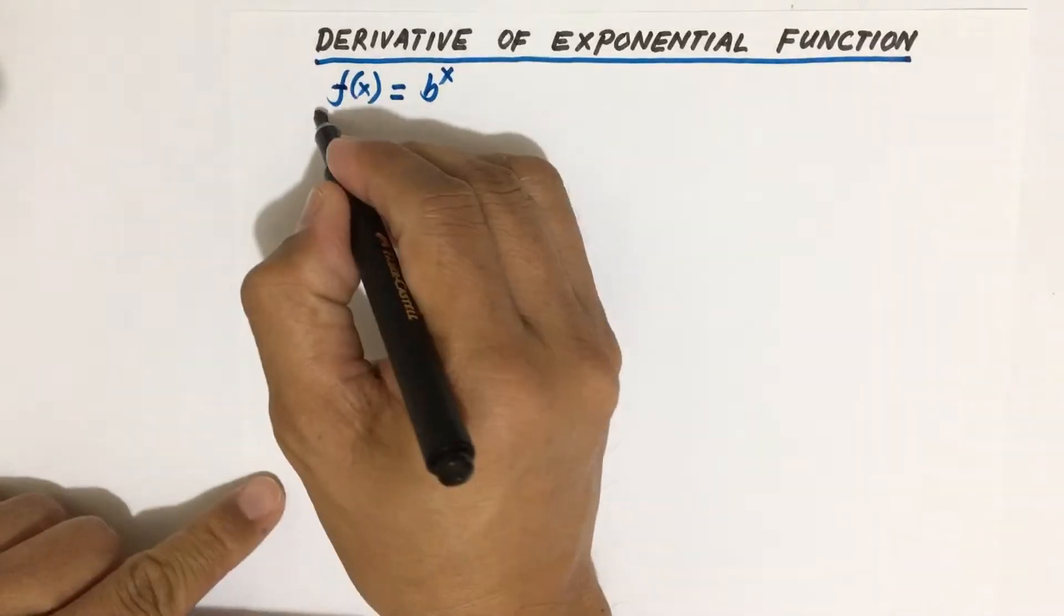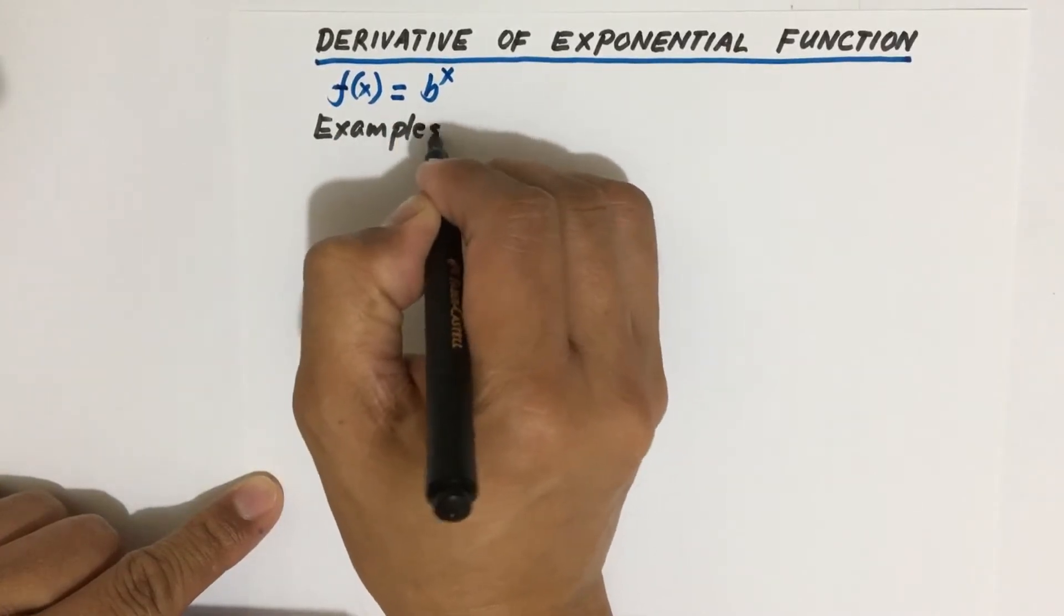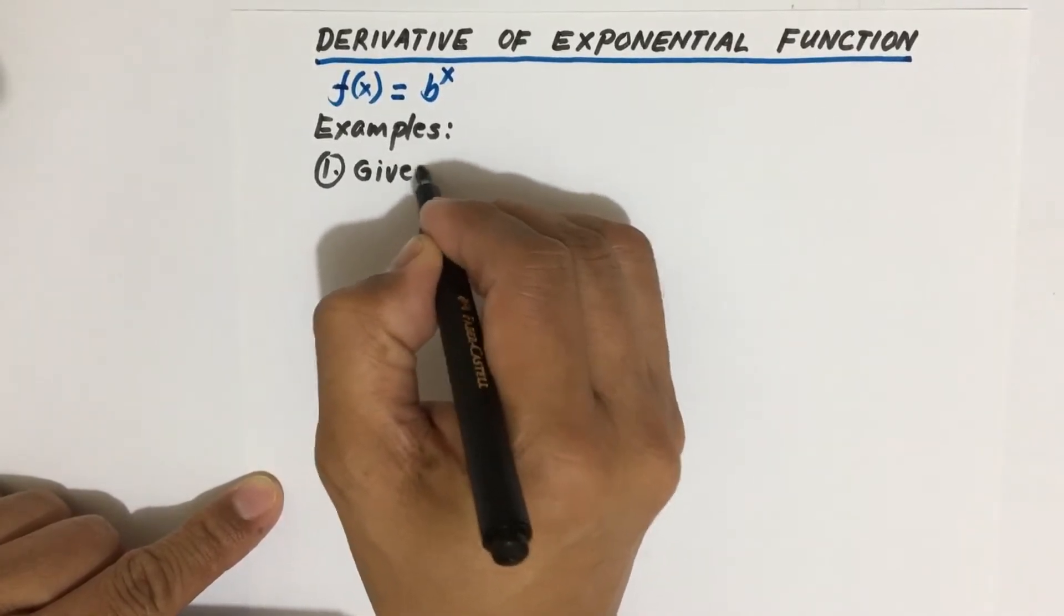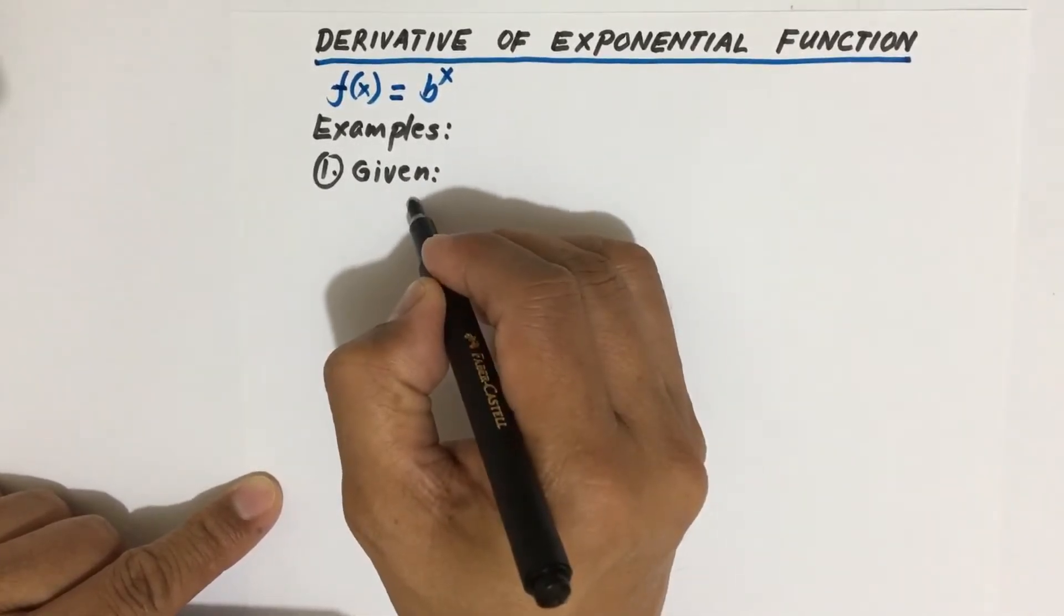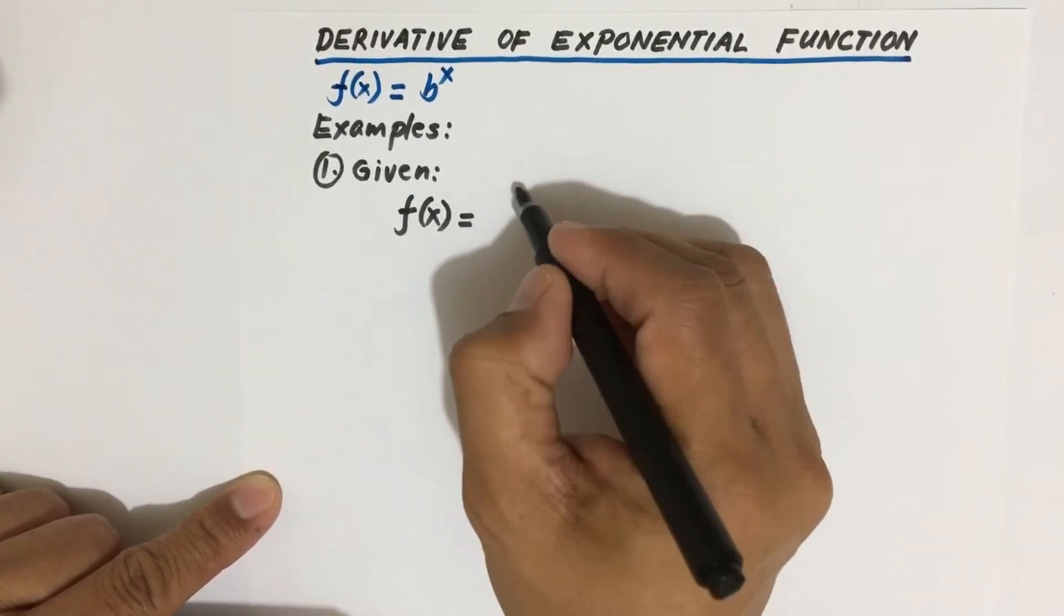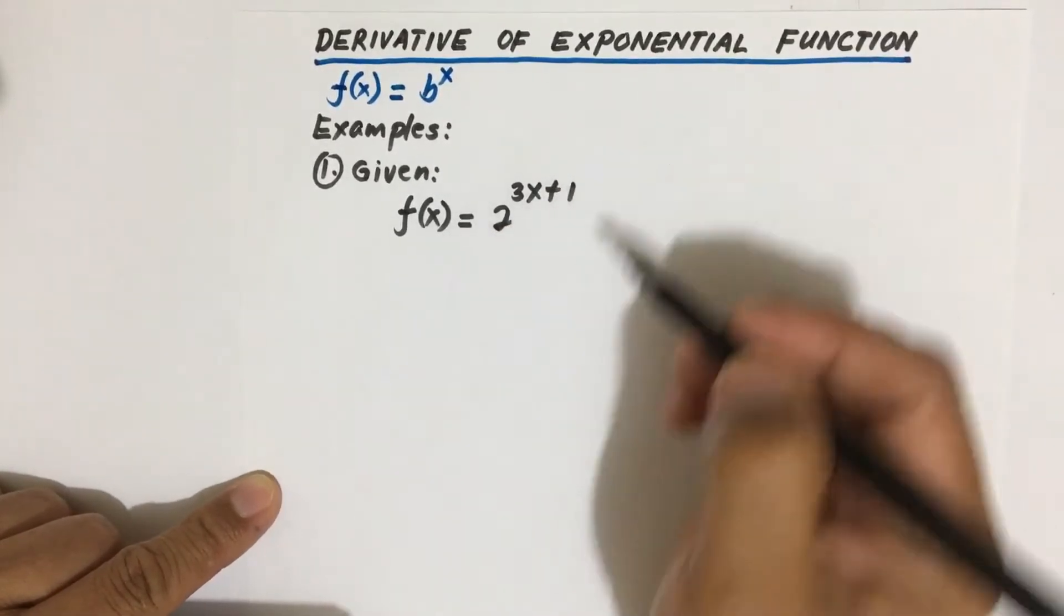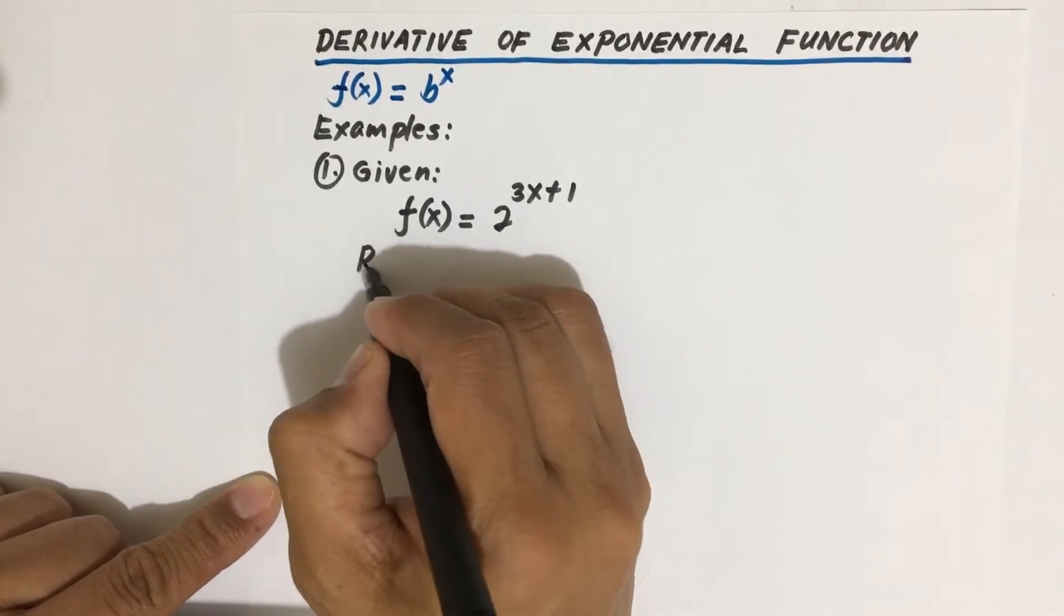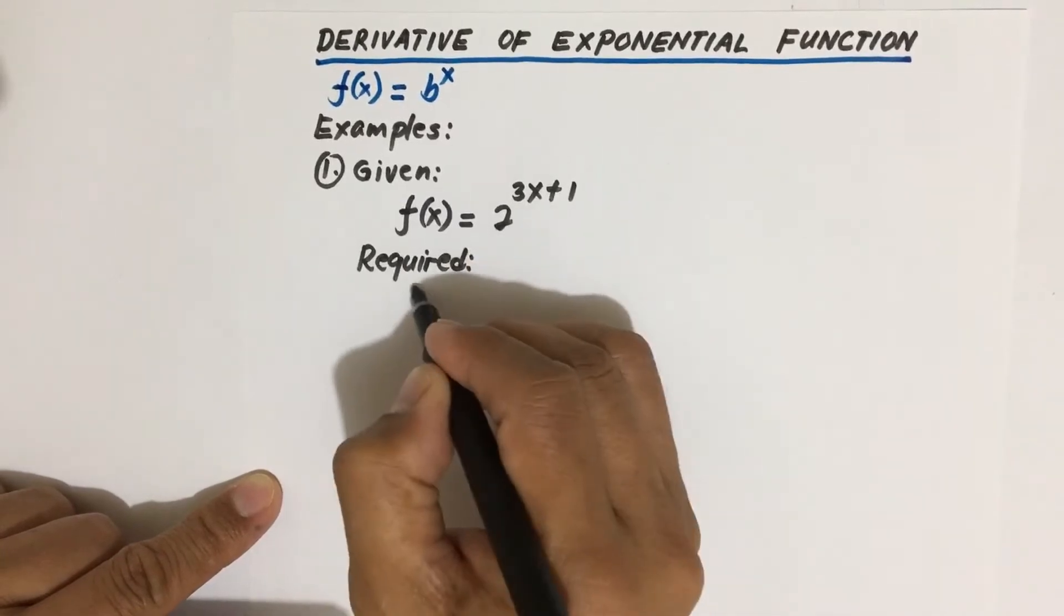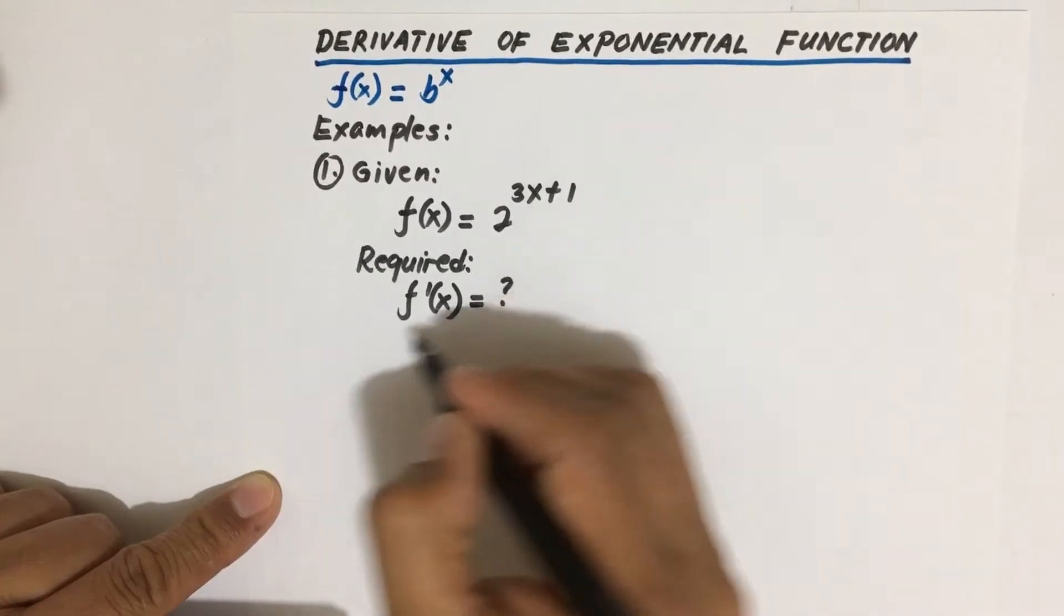Let us have these examples. Number one, we are given the function f(x) equal to 2 to the power 3x plus 1, and we are required to solve for the derivative of the given function or f prime of x.